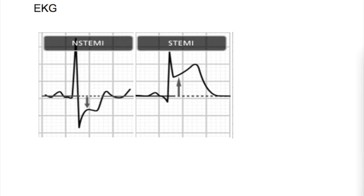In this video, we will discuss investigations done in myocardial infarction patients. The easiest and earliest investigation that is very important is EKG, because other tests require some time to get their results. There are two types of myocardial infarction: transmural and subendocardial.